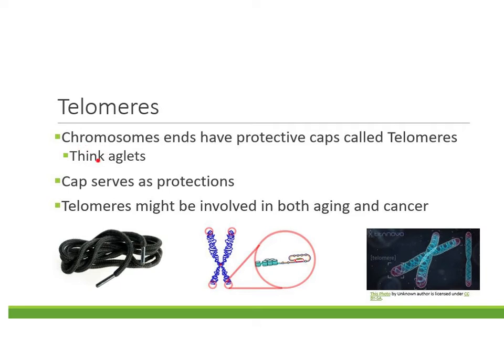Chromosome ends have protected caps called telomeres. Your chromosome is all your DNA condensed, and if it loosened up it would unravel just like a shoelace would. The telomere keeps it tight and compacted. We don't fully understand telomeres yet, but we think they have a lot to do with aging — as they get worn out and DNA starts to unravel, that may be why people age. There are also thoughts they might be connected to cancer. Telomeres are so important; we know we need them to keep DNA compacted in our chromosomes.